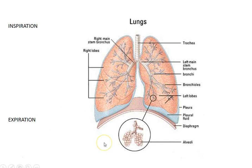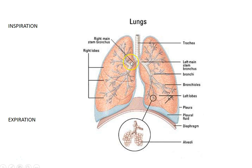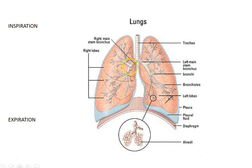Expiration is a passive process. The brain stops sending signals to the diaphragm, the diaphragm relaxes and returns to its dome shape, and the volume of the lungs goes down. Intrapulmonary pressure goes up, making it higher than atmospheric pressure, and air travels from high to low — you expire. The diaphragm relaxes, volume goes down, pressure in the lungs goes up, and air leaves the lungs.